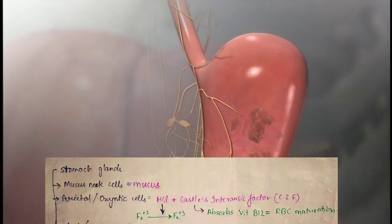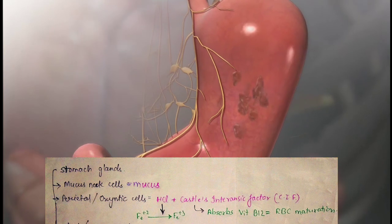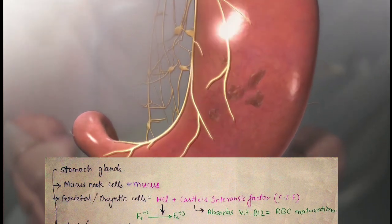Mainly there are four glands in the stomach. First are mucus neck cells. They secrete a 1 to 3 millimeter thick layer of mucus which prevents the stomach from the action of hydrochloric acid and digestive enzymes.